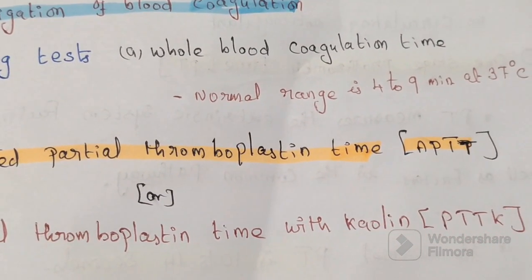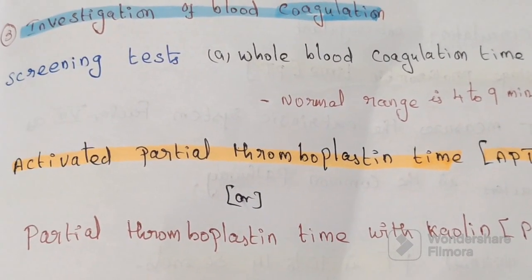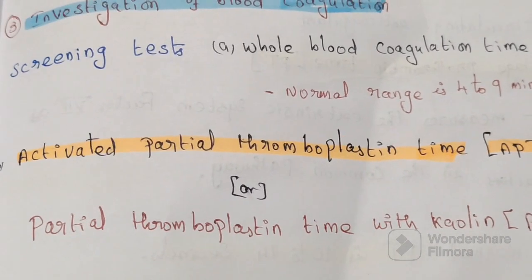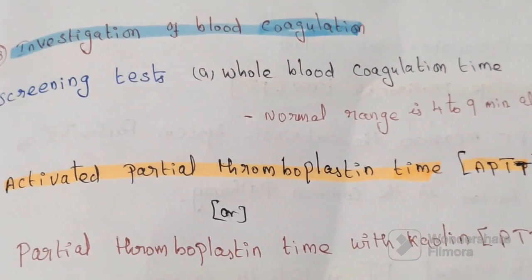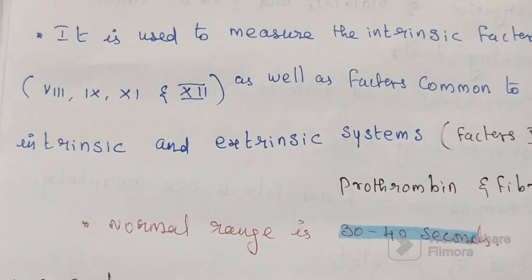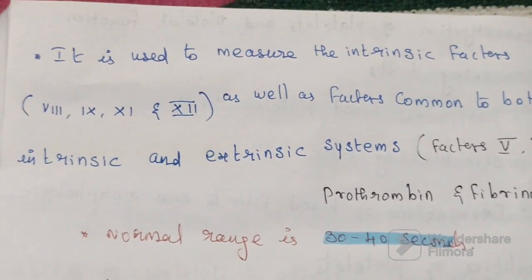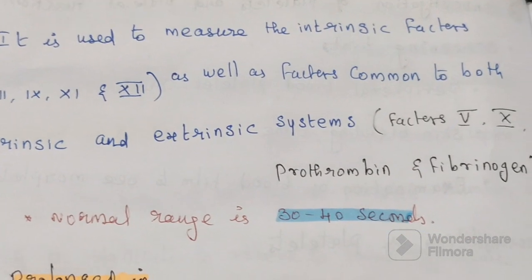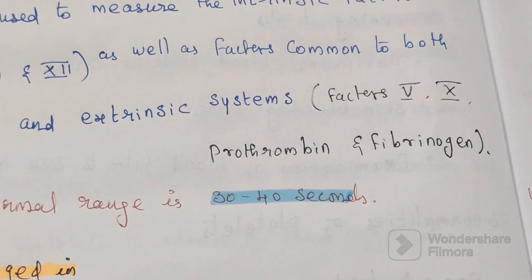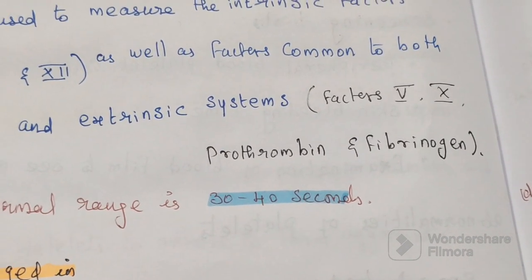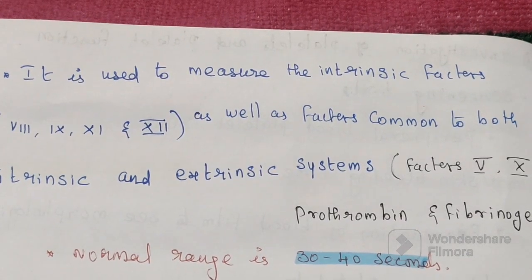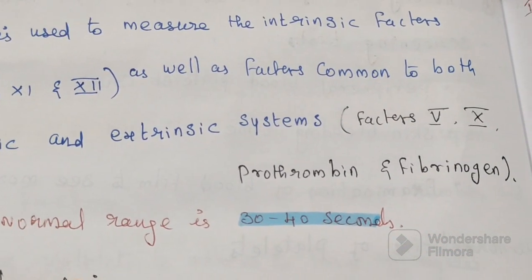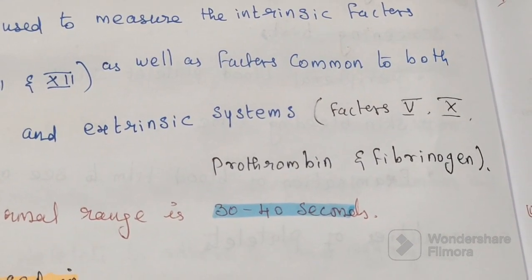The second screening test is activated partial thromboplastin time (APTT), also called partial thromboplastin time with kaolin. It is used to measure intrinsic factors 8, 9, 11, and 12, as well as factors common to both the intrinsic and extrinsic pathways: factors 5, 10, prothrombin, and fibrinogen.